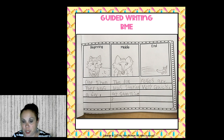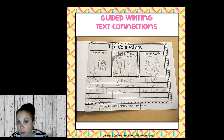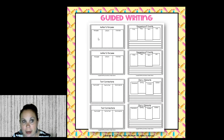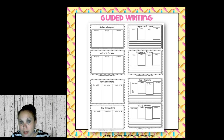The text connections template has students write about a text-to-self connection, text-to-text connection, and text-to-world connection, drawing a picture and writing a sentence for each. The author's purpose template covers persuade, inform, or entertain. There's also a sequence-of-events template — first, then next, and last — where they draw pictures and write sentences at the bottom, plus a story elements template covering character, setting, problem, and solution.